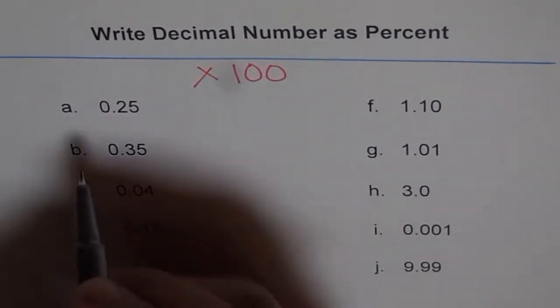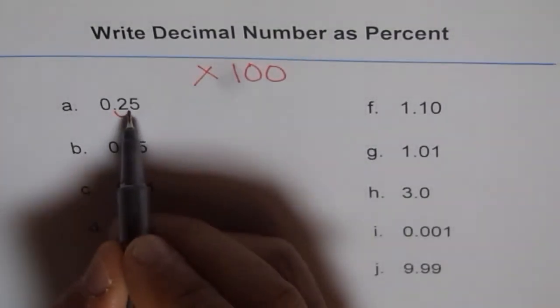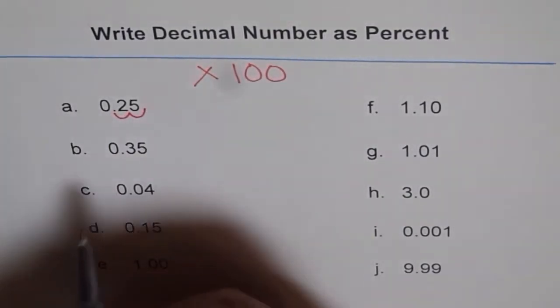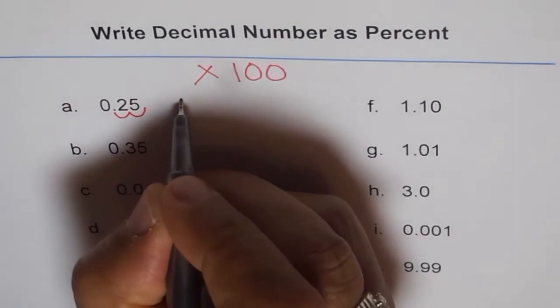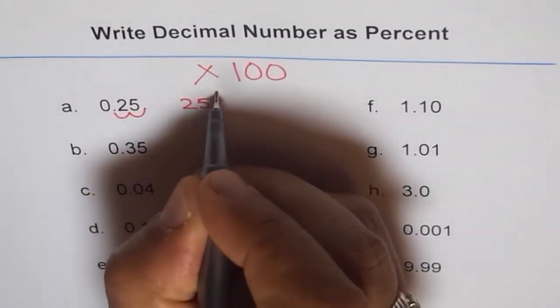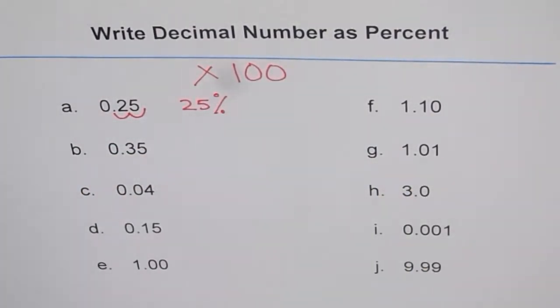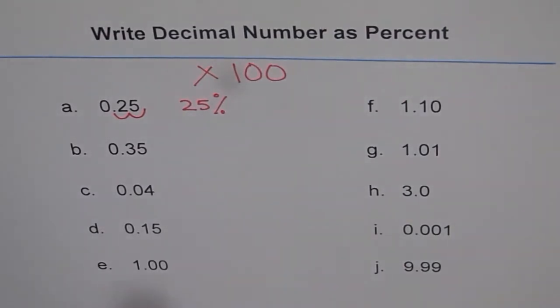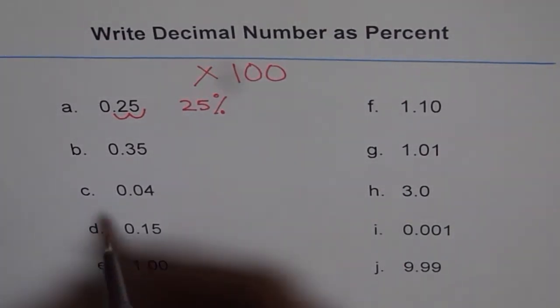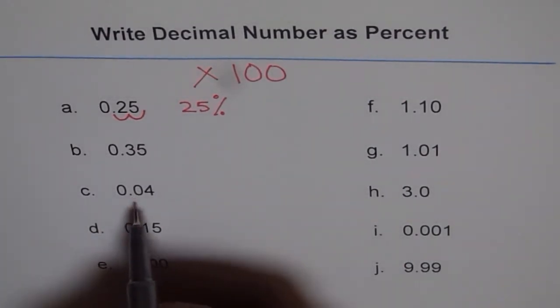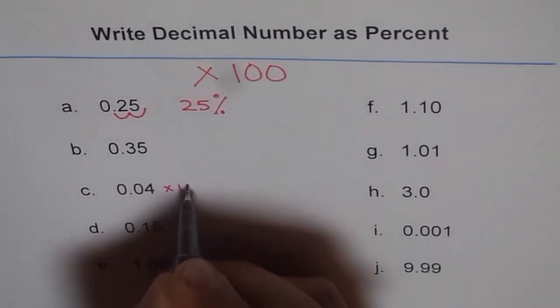When you multiply, the bigger number is moving two places to the right, and so you get 25, and then your percent sign—25%. That's how you do it. When you multiply by 100, that means you will do times 100.